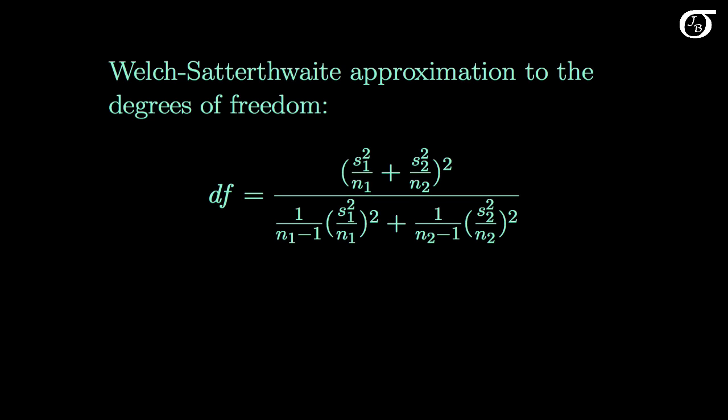Well it turns out that the appropriate degrees of freedom are given by this slightly ugly formula. And we usually rely on software to find the degrees of freedom and the appropriate t-value. But if we put in all of our sample values, we would see that the degrees of freedom here are 10.011.